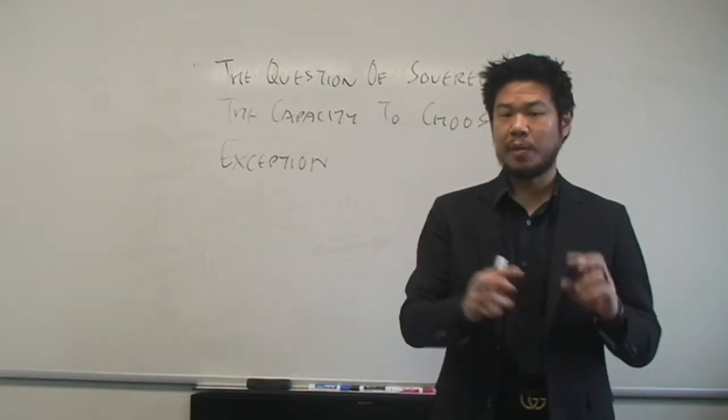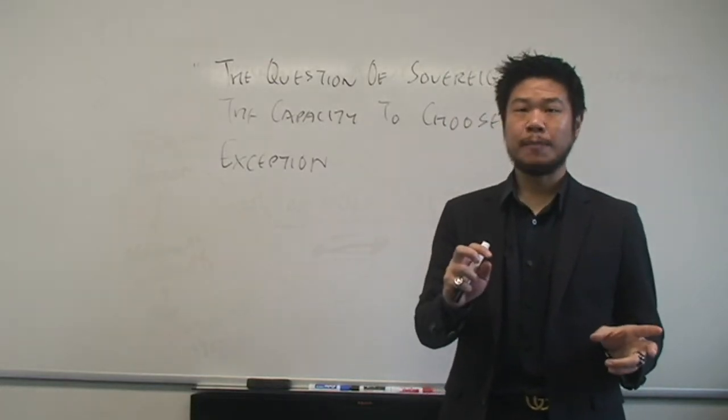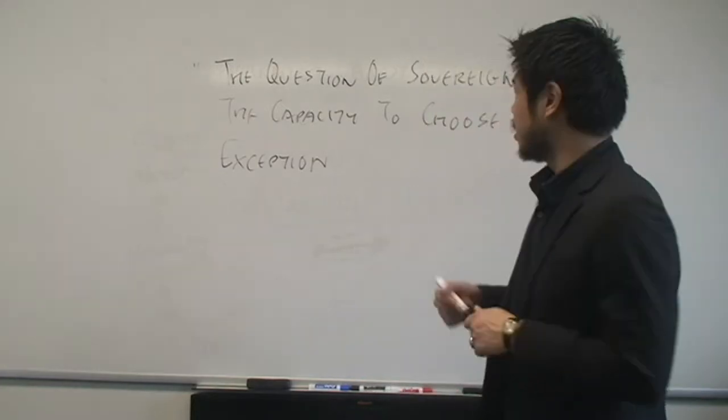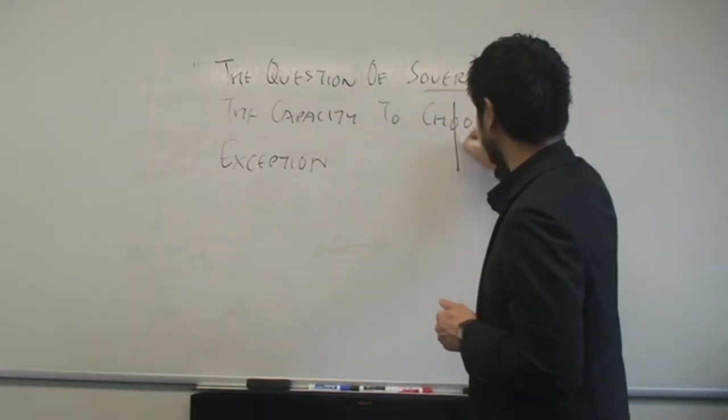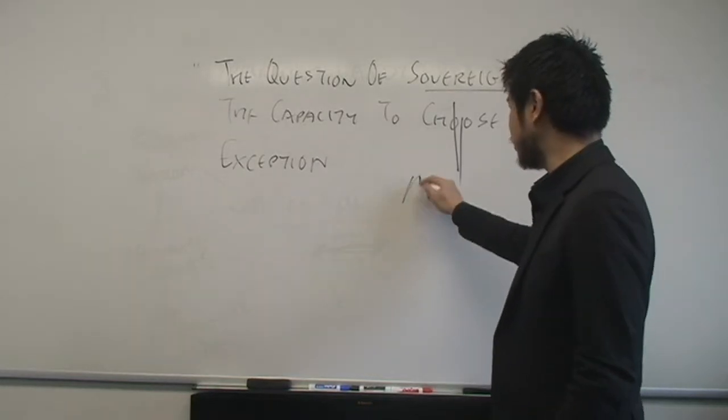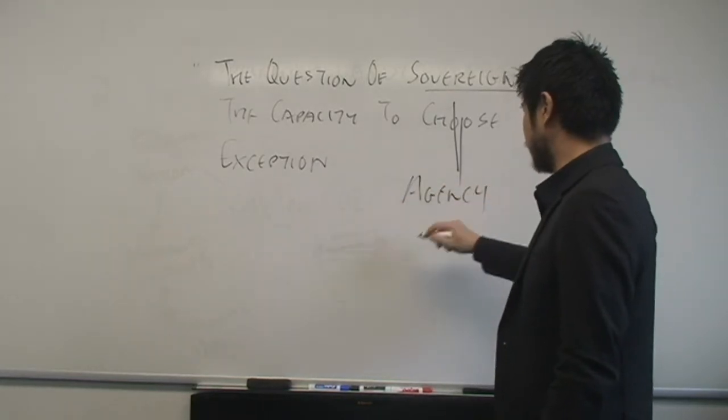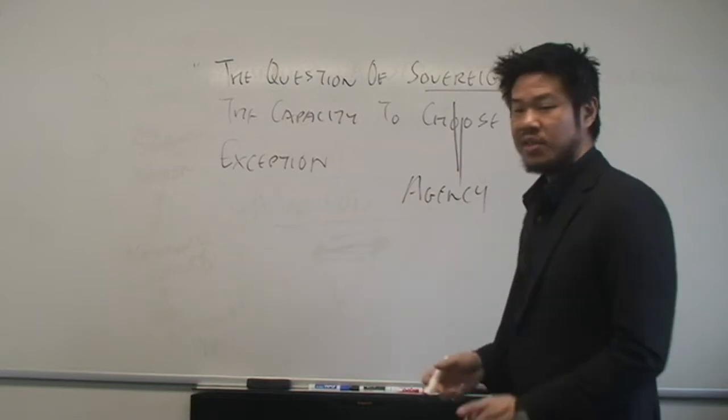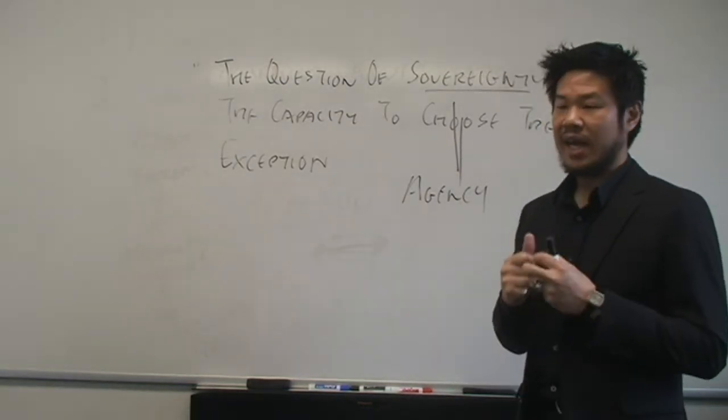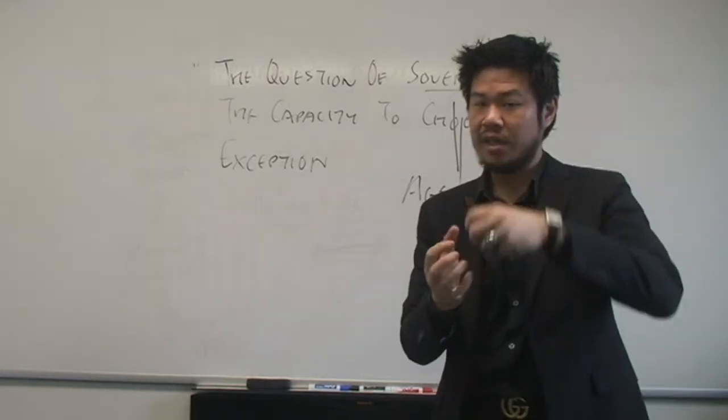And this goes back to the earlier point about pros and cons. That kind of really ugly dimension to sovereignty cannot be disassociated from things that we like, like agency and rights, and individualism and self-determination and independence. All of that has that kind of hierarchy embedded in it. Does that make sense?